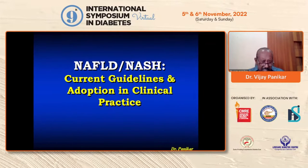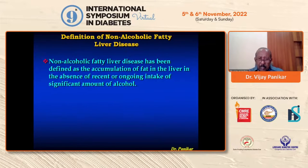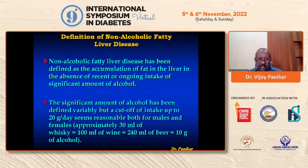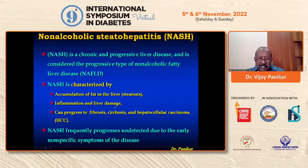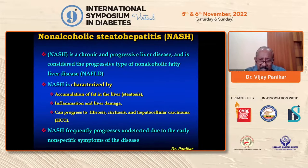Today, NAFLD is becoming an epidemic, not only in our country but across the world. Non-alcoholic fatty liver disease is basically an accumulation of fat in the liver in the absence of ongoing intake of a significant amount of alcohol — the cutoff being 20 grams daily. NASH is a chronic progressive liver disease, considered the progressive type of NAFLD, characterized by steatosis leading to inflammation, liver damage, and can progress to fibrosis and hepatocellular carcinoma.